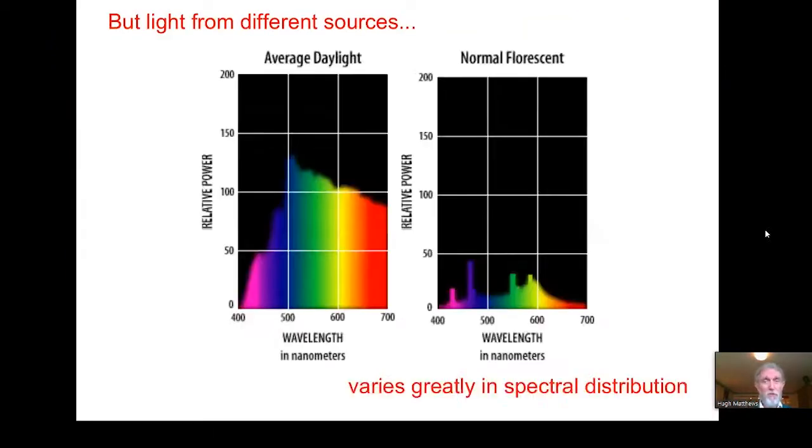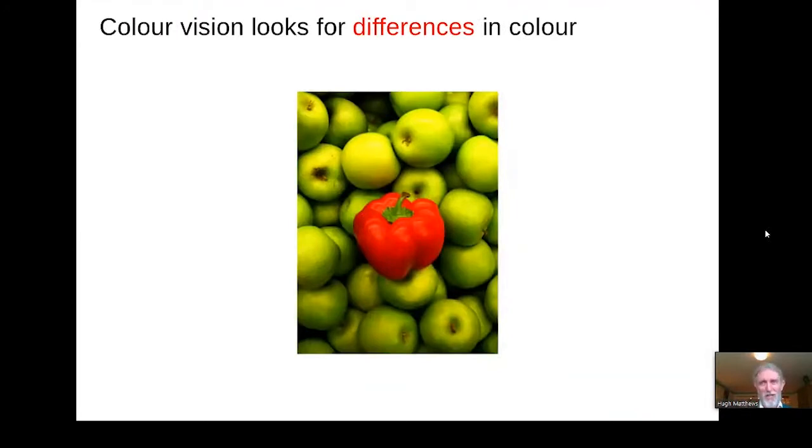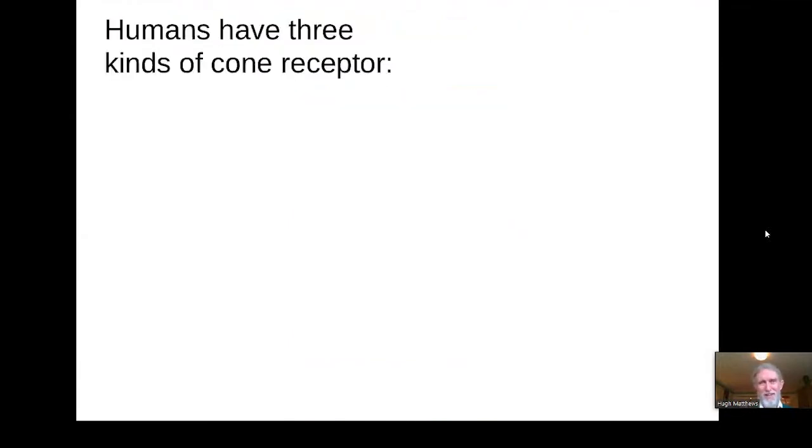But light from different sources varies tremendously. Average daylight is quite well behaved, plotting out the relative intensity as a function of the wavelength. But artificial light can be really weird. This is the spectrum of a fluorescent tube, and it's got spikes in the violet, the blue, the green, and the greeny yellow, and then this fuzziness in between. And we'd like our visual system to be able to judge colours, irrespective of whether we're looking at the objects under daylight, or fluorescent light, or tungsten light, or something else. So how can we judge spectral reflectance reliably? The answer is by looking for differences in colour. And this is known as the process of colour contrast.